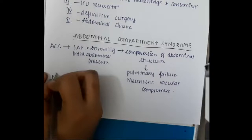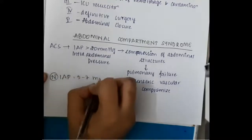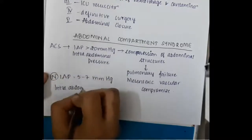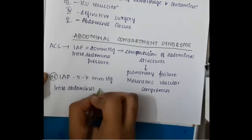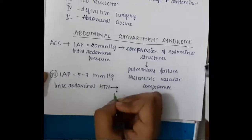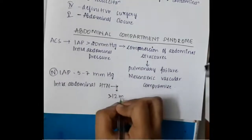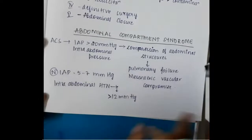The normal intra-abdominal pressure is 5 to 7 millimeters of mercury. Intra-abdominal hypertension is called when the pressure is more than 12 millimeters of mercury, and we call it as Abdominal Compartment Syndrome if the intra-abdominal pressure is more than 20 millimeters of mercury.